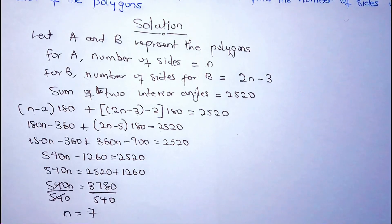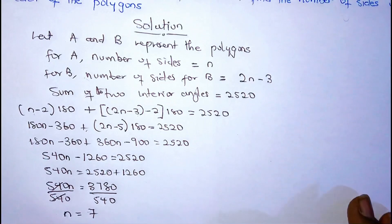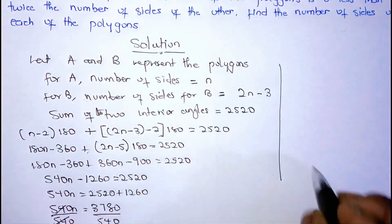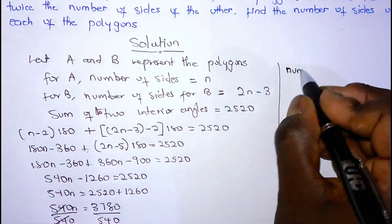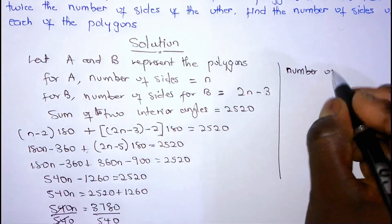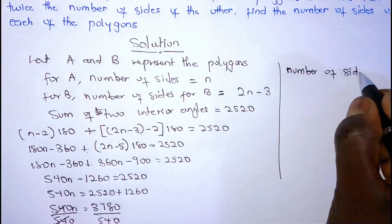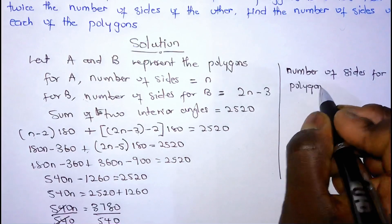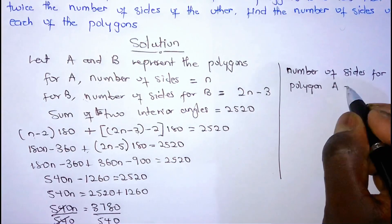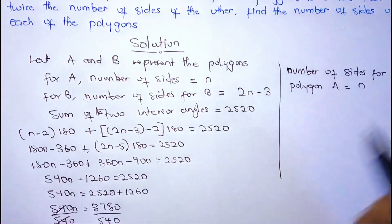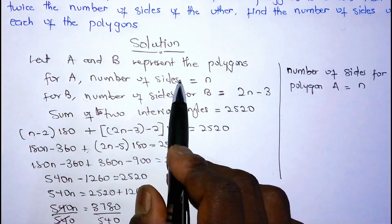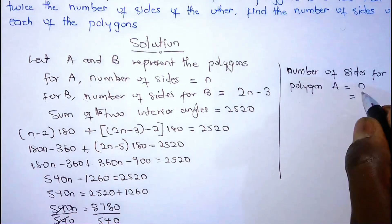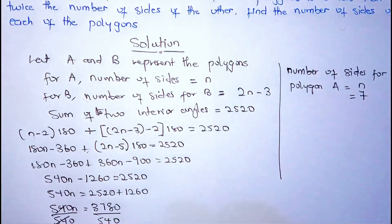So the number of sides for polygon A. Let's continue here. Number of sides for polygon A is equal to N. Because we said for A, the number of sides is N. So we had N to be 7.